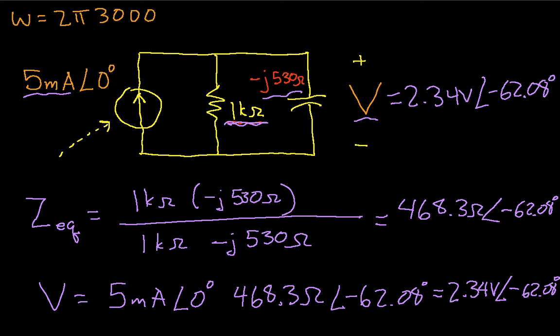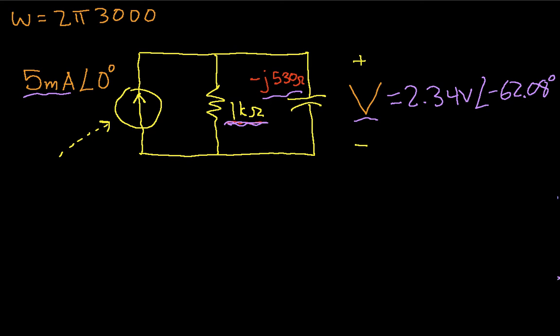So step 4 is to convert that phasor representation back into a time signal. The time signal is going to be V of t equals 2.34 volts times the cosine of ωt, which is 2π 3000t minus 62.08 degrees.